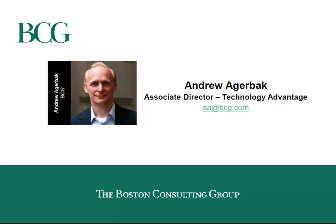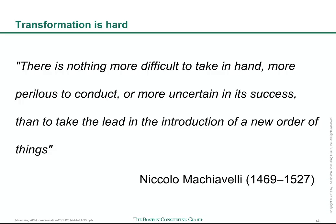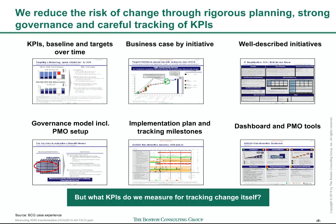Clearly, transforming IT functions at that scale is not an easy task. I thought I'd start with the quote we have here on page two, which is from Machiavelli, 500 years ago: 'There is nothing more difficult to take in hand, more perilous to conduct, or more uncertain in its success than to take the lead in the introduction of a new order of things.' So basically, change is hard. And for that reason, in driving a large-scale transformation program, we reduce the risk of change — as we see on page three — by rigorous planning, strong governance, and careful tracking of KPIs.